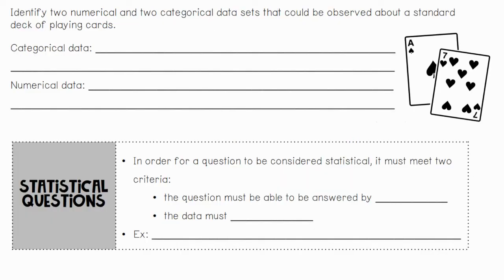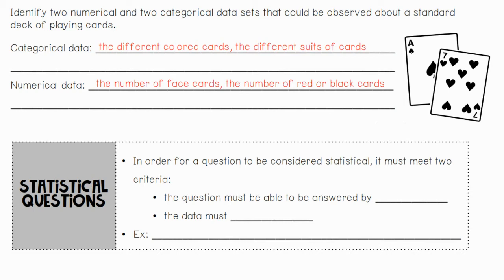Now using a deck of cards, we're going to separate it into two categories to see how the same object can produce both categorical and numerical data. For categorical data, we could categorize the cards by color — red and black — or by suit: hearts, clubs, and so on. For numerical data, there are numbers on the cards, so we could categorize by the number on each card, or go a step further and count the number of red or black cards.